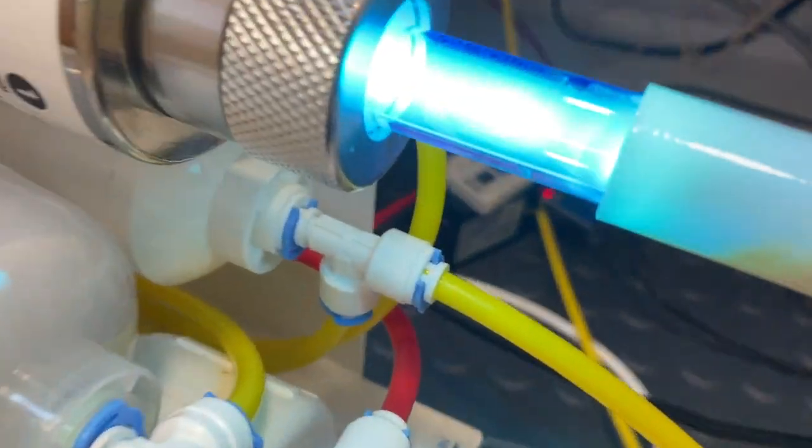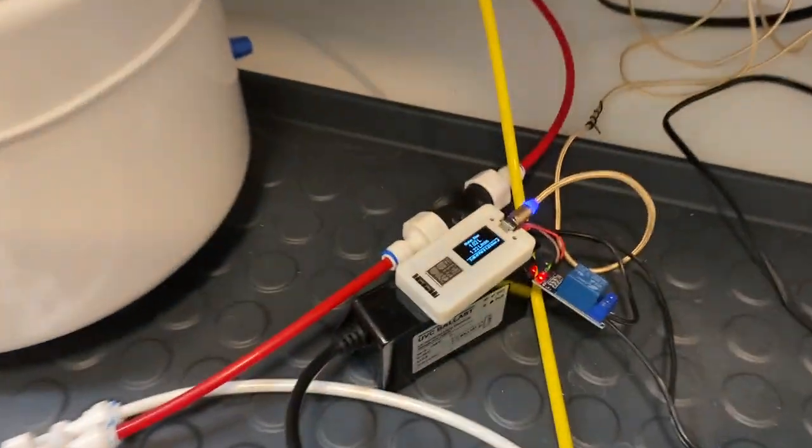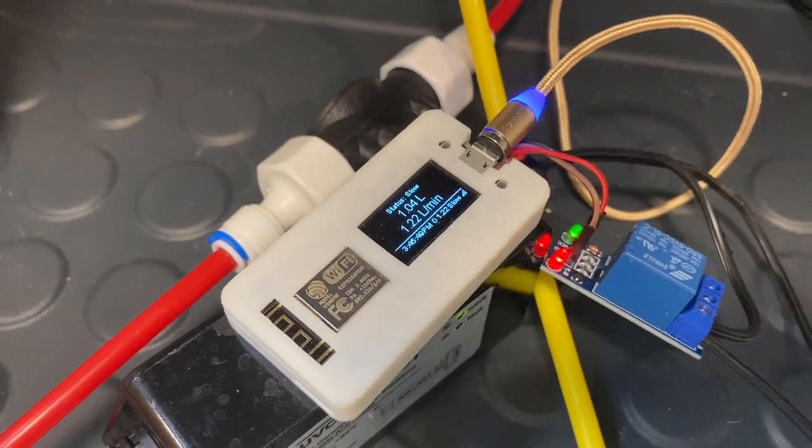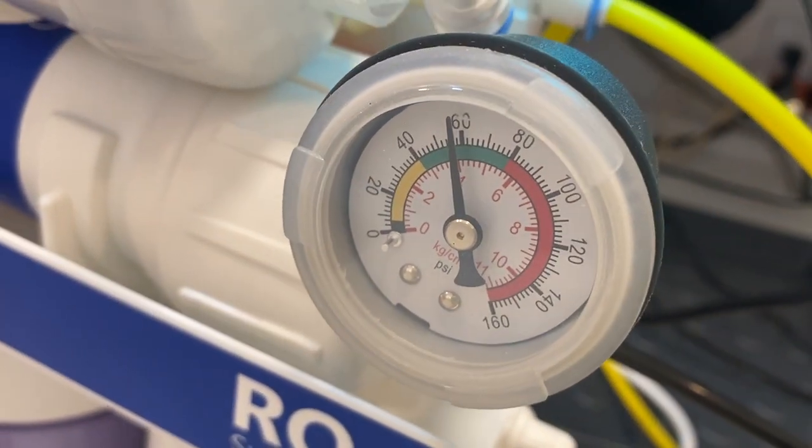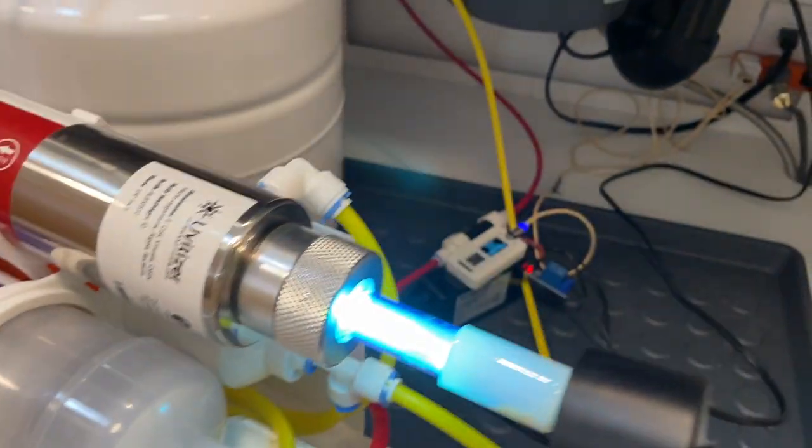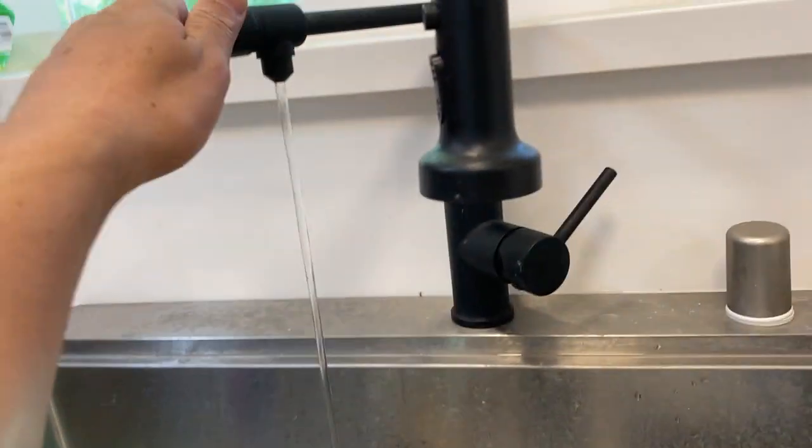You see the UV light is on. Yeah, because there's water flow. So the UV light is on and there's pressure here. Yeah, so that means the water is flowing. Okay, let me turn off.